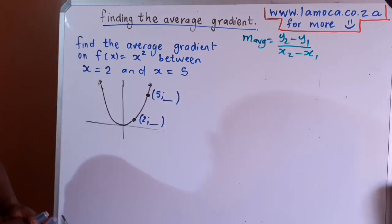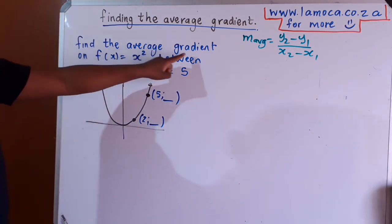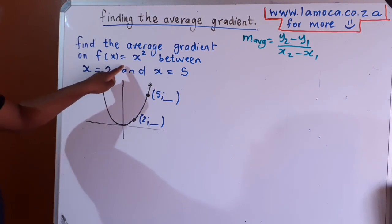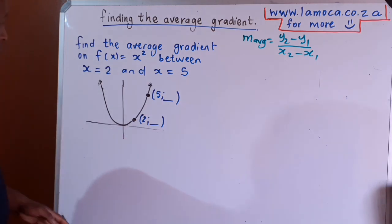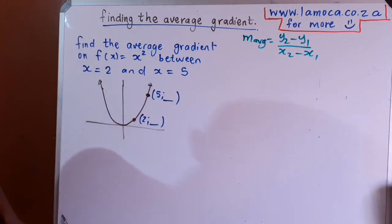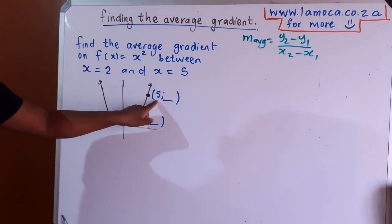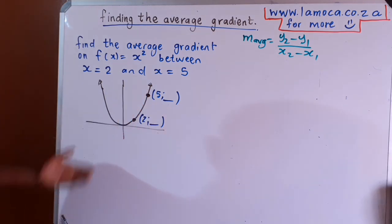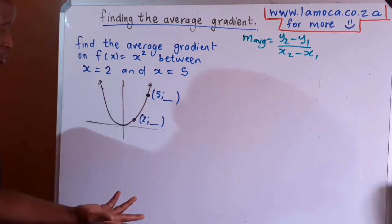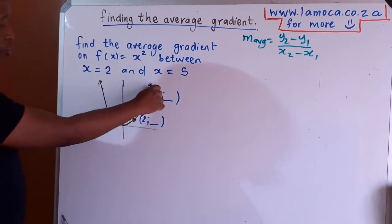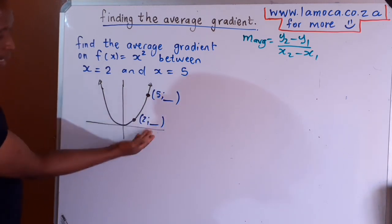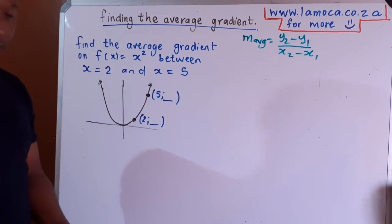Now look at this question where we are required to find the average gradient on f of x equals x squared, between x equals 2 and x equals 5. The graph of f of x is the one I have here — it's passing through x equals 2 and also through x equals 5. You will notice that you are missing the corresponding y variables, because to work out the gradient you need y2 minus y1 over x2 minus x1. So you do have the x values but you don't have the corresponding y values.